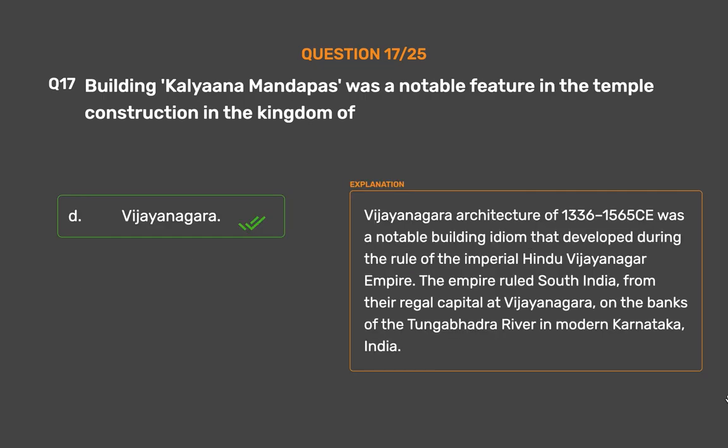The correct answer is Option D: Vijayanagara. Vijayanagara architecture (1336–1565 CE) was a notable building idiom that developed during the rule of the imperial Hindu Vijayanagara Empire, which ruled South India from their regal capital at Vijayanagara on the banks of the Tungabhadra River in modern Karnataka, India.